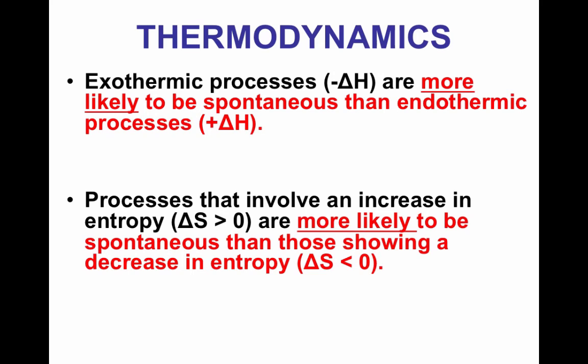So again, just to summarize, exothermic processes when delta H is negative are more likely to be spontaneous than endothermic processes, but that does not mean that endothermic processes are not spontaneous. So exothermic are more likely, but endothermic could happen. Think about different examples where you have an endothermic process, such as dissolving maybe a salt that absorbs heat, melting ice.